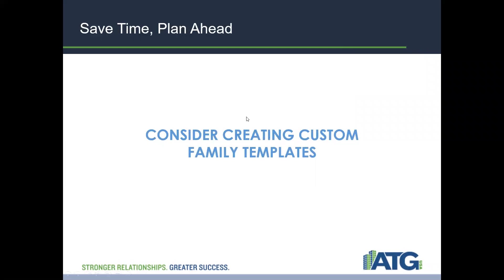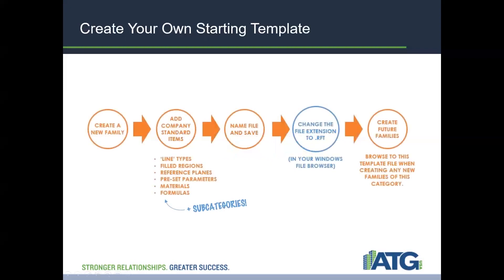As you can tell, we've talked about quite a few things that need to be considered from the get-go on families. None of them are as intense as shared parameters, but there are some decisions that have to be made ahead of time. It may behoove you to actually create your own starting templates. A lot of people don't realize you can do this. If you find yourself starting with Revit's templates and adding the same content — patterns, materials, formulas, parameters — over and over again, you can make your own template. Create a new family, do everything you want to it, save it, then in Windows just change the file extension to RFT.